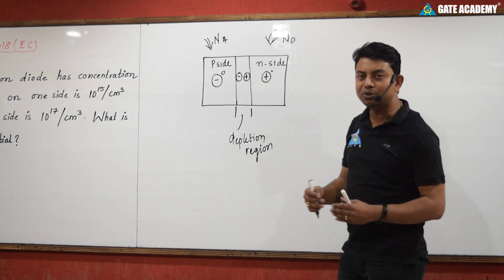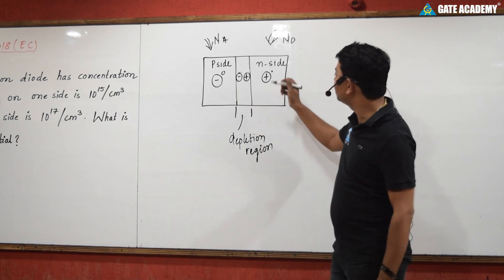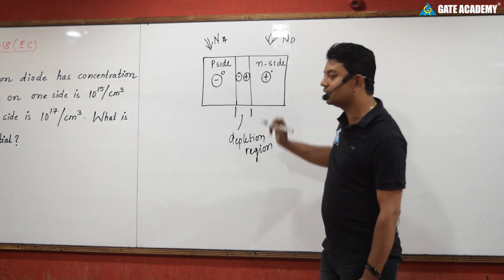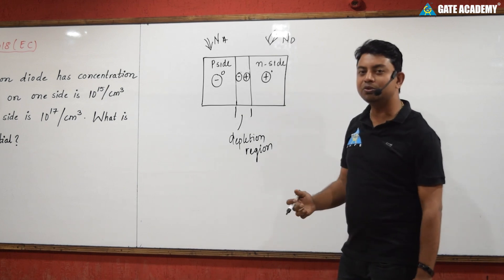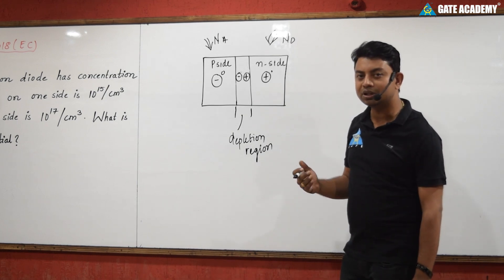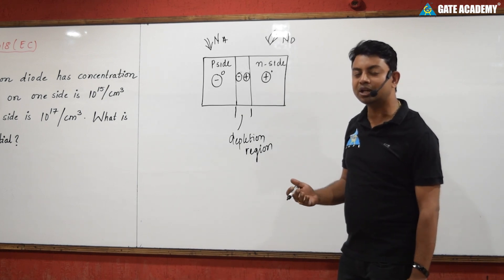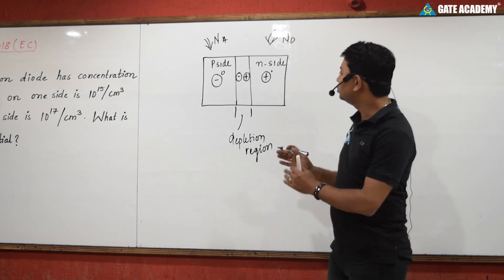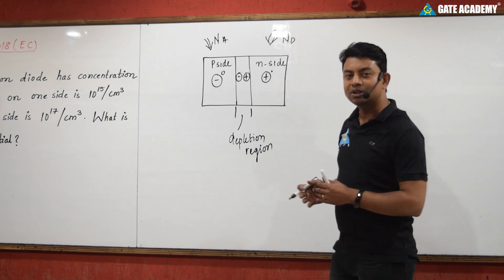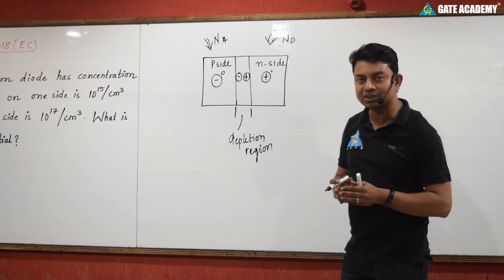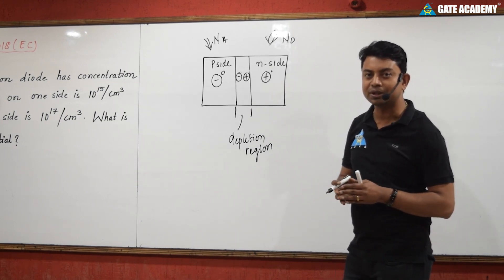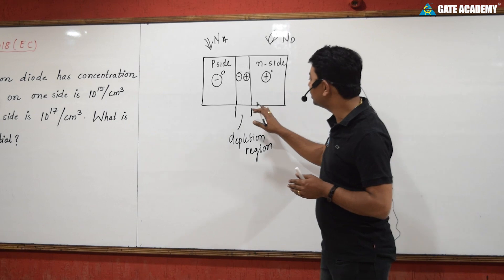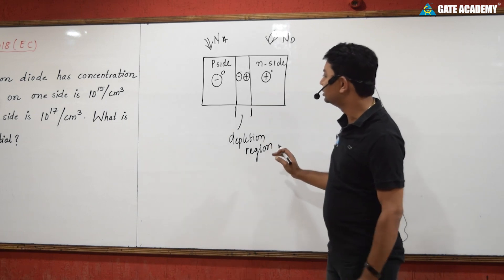This diffusion of charge carriers continues until the concentration of charge carriers on both sides becomes equal. These are the fundamental concepts of PN junction operation.